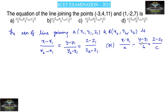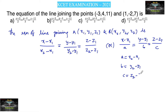Where a, b, c are the direction ratios, where a = x2 - x1, b = y2 - y1, and c = z2 - z1. These are the direction ratios of a line.